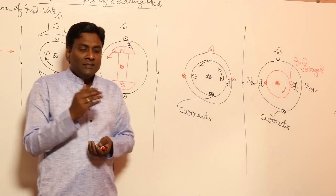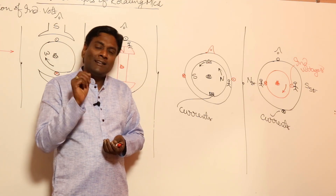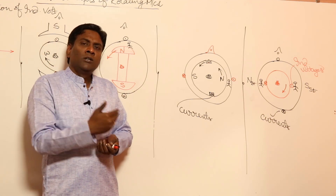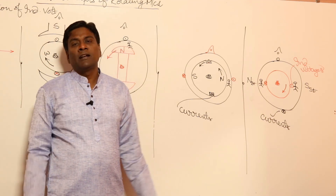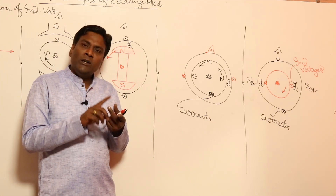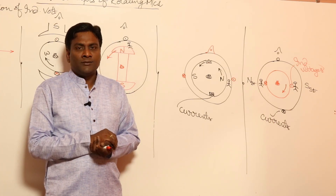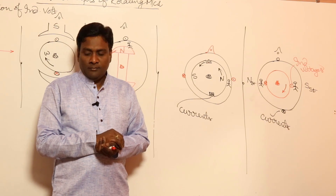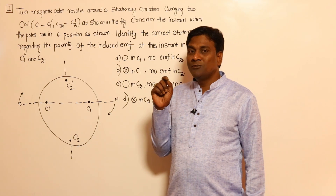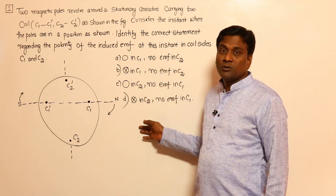Immediately I will solve a GATE problem such that you will understand the importance of this. In GATE, very small things can get two marks. After that, I will tell you how to calculate the direction of torque without using left hand or right hand. After that, let me combine everything — induced voltage and torque direction — and produce motor and generator examples.